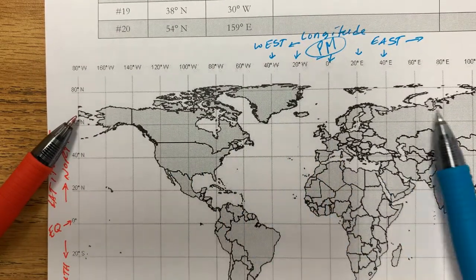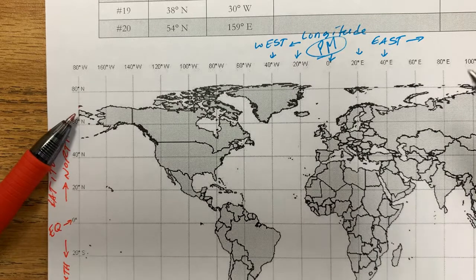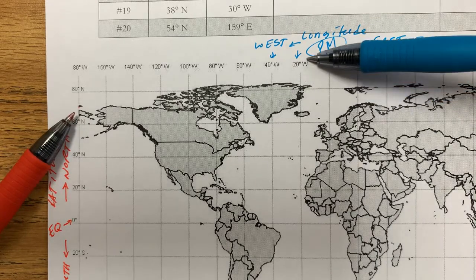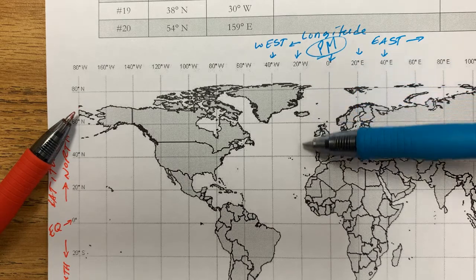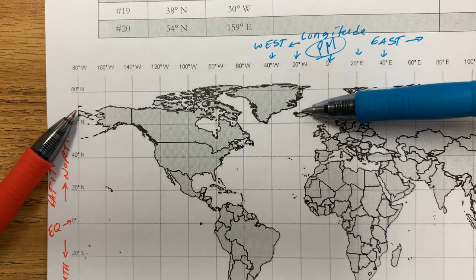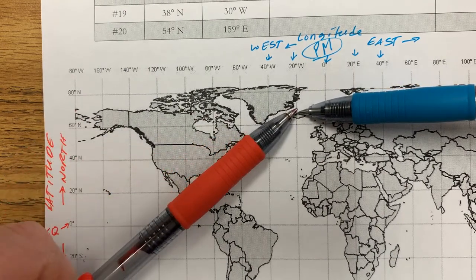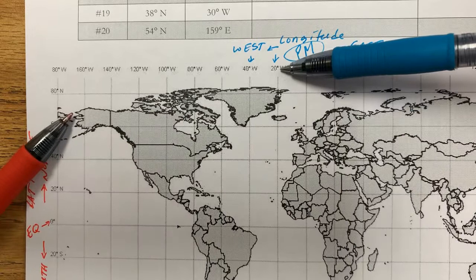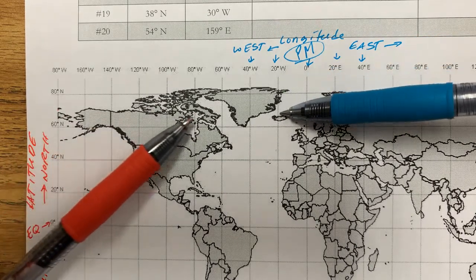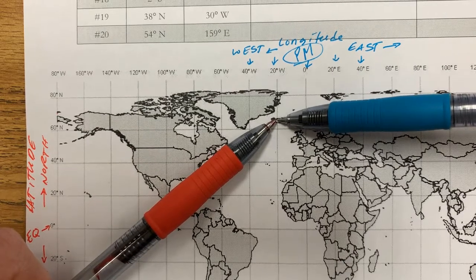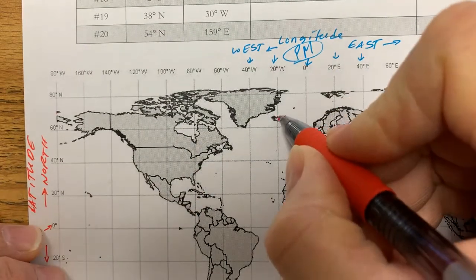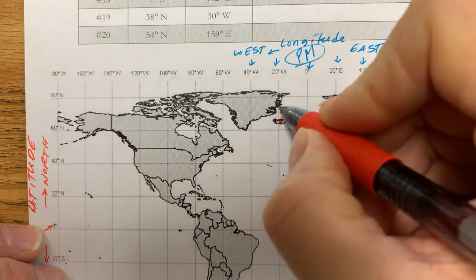And our longitude was 19 degrees west, so we come over here. 20 degrees west is here, so 19 degrees west is going to be right about here. So this point is where this line and this line meet. 19 degrees west and 64 degrees north meet about right here, and boom, that point is right about there. We're going to go ahead and label that number one.